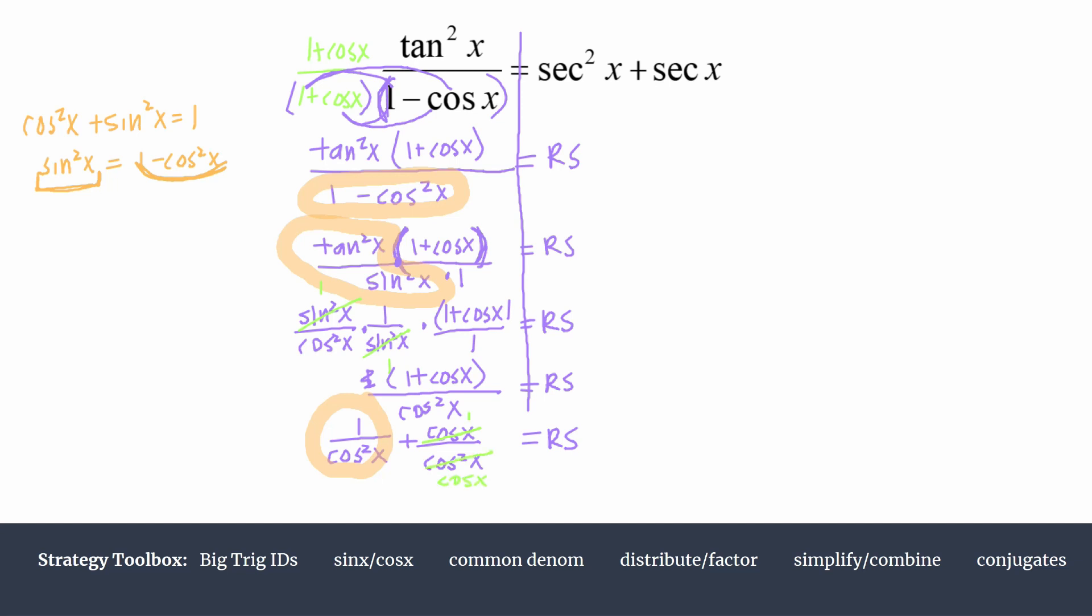We'll cancel one of those cosine x's. So we're left with 1 over cosine x. And we'll use the reciprocal identity again. We know 1 over cosine x is secant x.